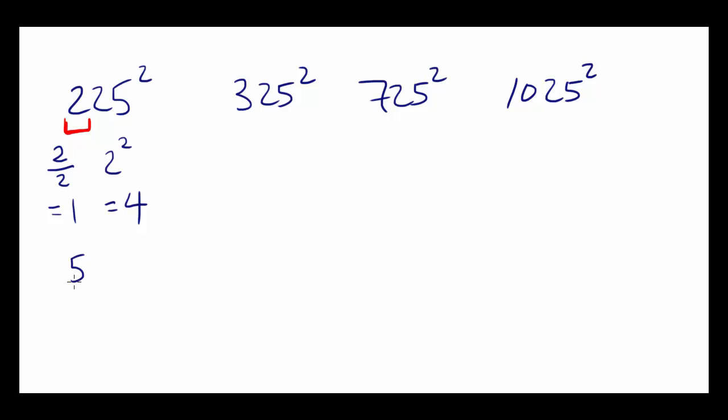Next, you're going to multiply this by 10, which gives you 50. And you're always going to put 625 at the end.